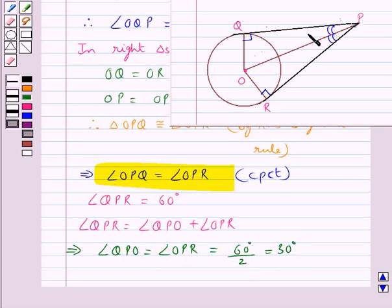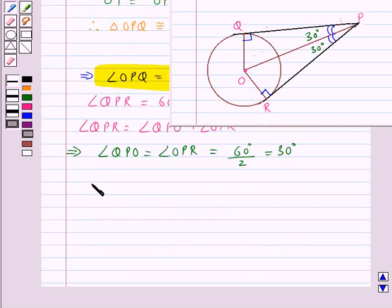So this would mean angle QPO is equal to angle OPR is equal to 60 degrees upon 2, that is equal to 30 degrees. So this is 30 degrees, this is 30 degrees. Now in triangle OQP, angle OQP plus angle QPO plus angle